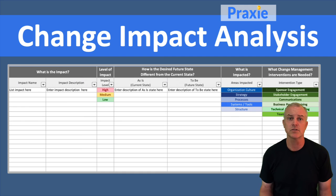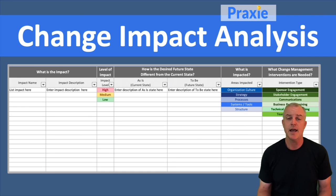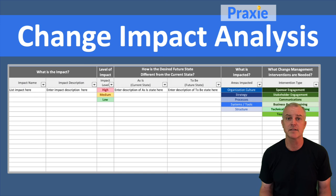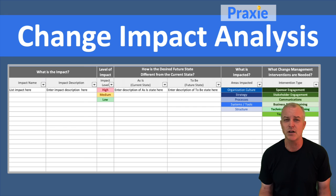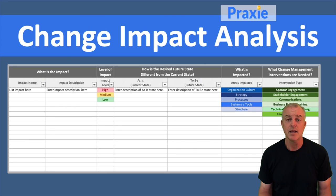As you go through your impact analysis, you can also look at the from state — the current state they're in — and then the to-be state, which is the future state they will be living within if the change is successful. This helps you get a feel for the full scope of impact by defining the as-is and to-be states.